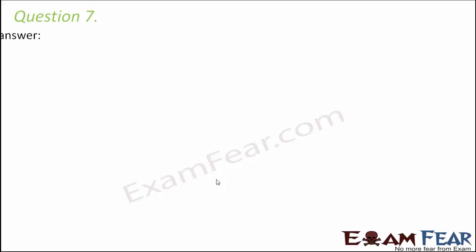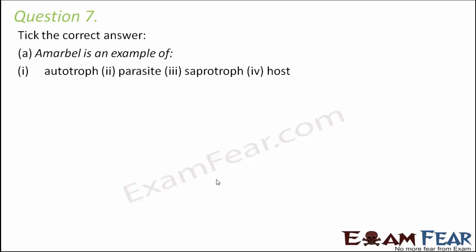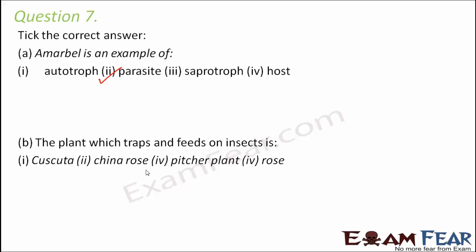Question number seven: Check the correct answer. Amarbale is an example of — autotroph, parasite, saprotroph, or host? Amarbale is a parasite; it lives on other plants and derives nutrition from them. The plant which traps and feeds on insects — cuscuta, china rose, pitcher plant, or rose? It is the pitcher plant, because its leaves are modified into pitcher-like structures that trap insects.